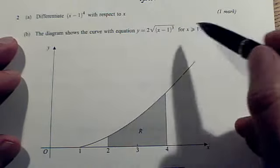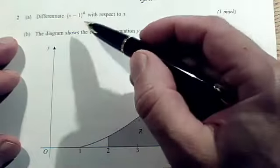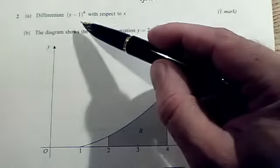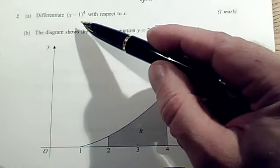Okay, in question 2, in the first part for one mark, we've got to differentiate a bracket to the power 4. So we've got a simple function inside the bracket. This is an easy case of the chain rule.